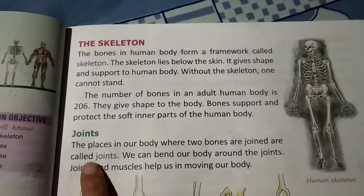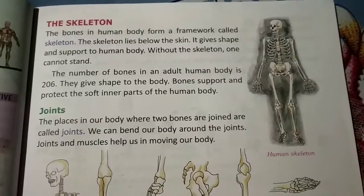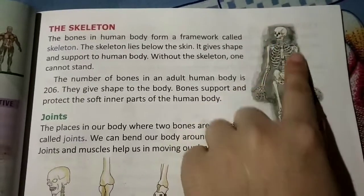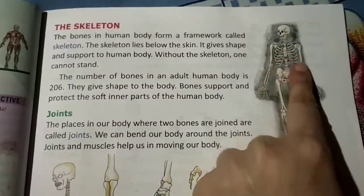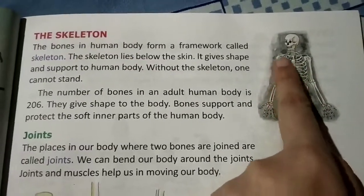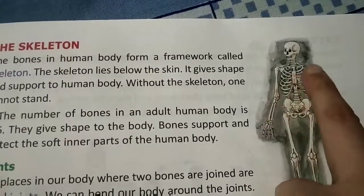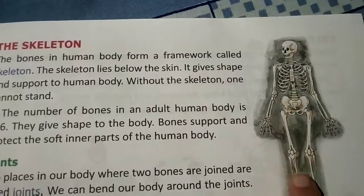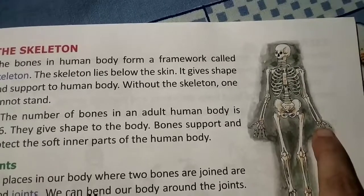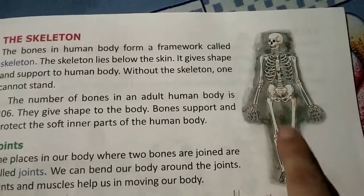The first topic is the skeleton. The bones in the human body form a framework called a skeleton. There are different kinds of bones and they are joined together — they are attached to each other and form a framework that is called the skeleton.